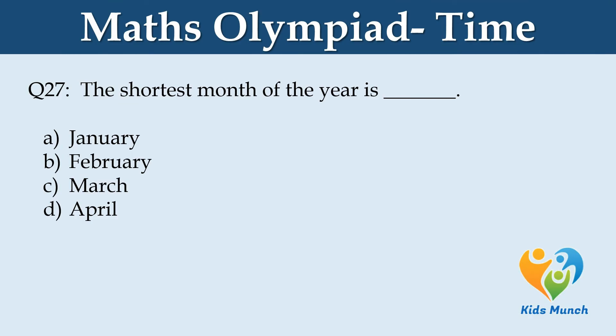The shortest month of the year is dash. Option A: January. Option B: February. Option C: March. Option D: April.